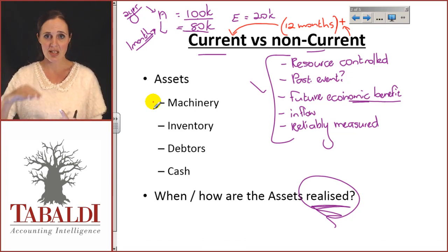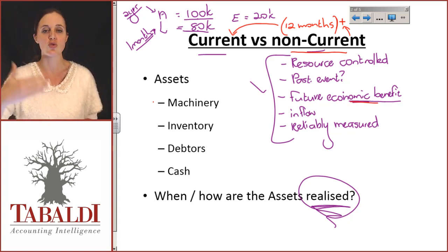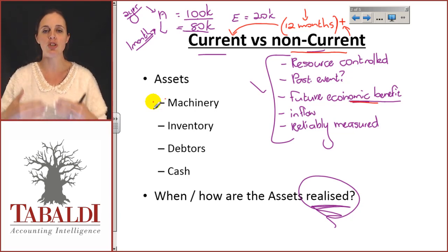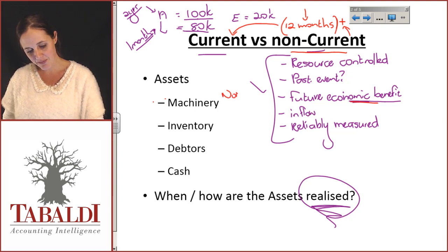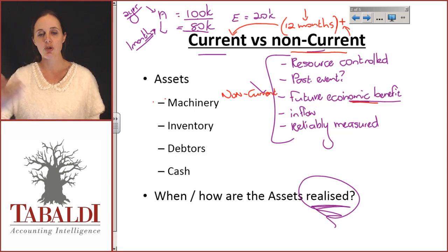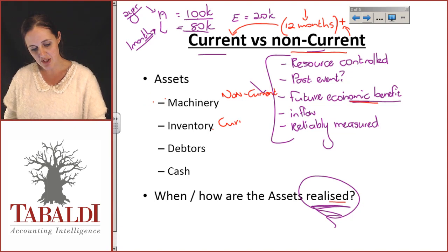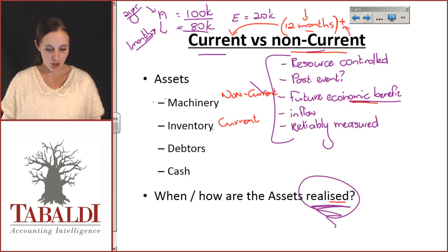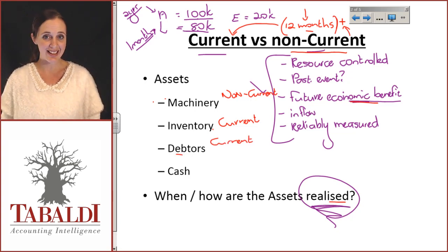These long-term assets are expected to bring economic benefits for more than 12 months. Your property — that factory — is not going to be useful to you for just 12 months; it's going to be useful for longer than 12 months. Therefore, machinery, property, plant, and equipment are considered non-current because those benefits come to you for more than 12 months. Inventory — we really hope you don't take more than 12 months to sell it, so it's generally considered current. Your debtors — people that owe you money — we hope they're going to pay you within the next 12 months.